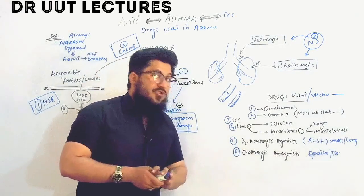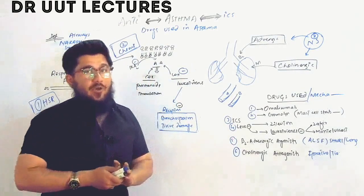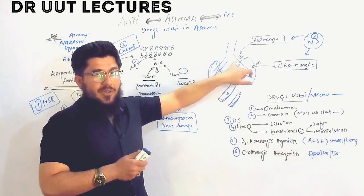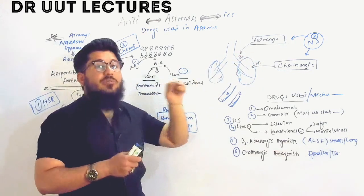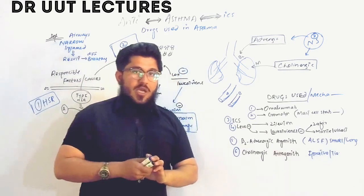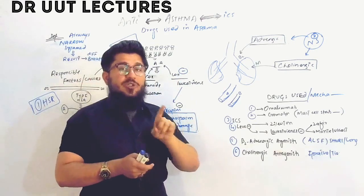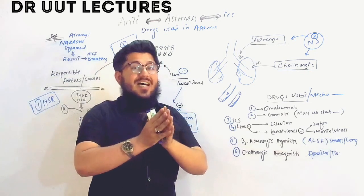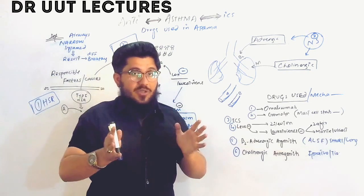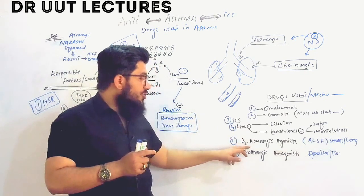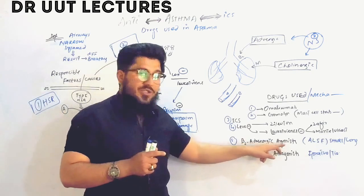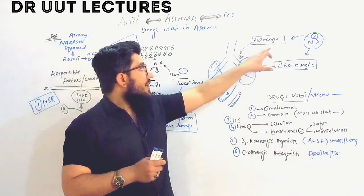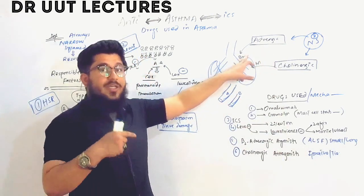The next one is the beta-2 adrenergic agonist. Remember that adrenergic supply to the lungs acts on the beta-2 receptors — they stimulate the beta-2 receptors, which causes bronchodilation. So here we are taking drugs called beta-2 adrenergic agonists, because the adrenergic supply was supposed to increase bronchodilation by stimulating the beta-2 receptors.